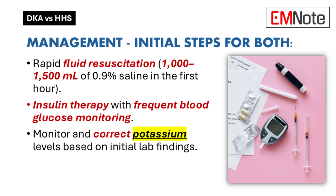After fluids, start IV insulin therapy right away to bring blood sugar down — but watch out for hypoglycemia as blood glucose starts to drop, since it can happen fast. Frequent blood glucose checks are essential, and be ready to adjust the insulin infusion rate. You want to control glucose without overshooting. We also can't forget potassium — it can make or break things in DKA and HHS. Monitor serum potassium and correct any abnormalities right away.